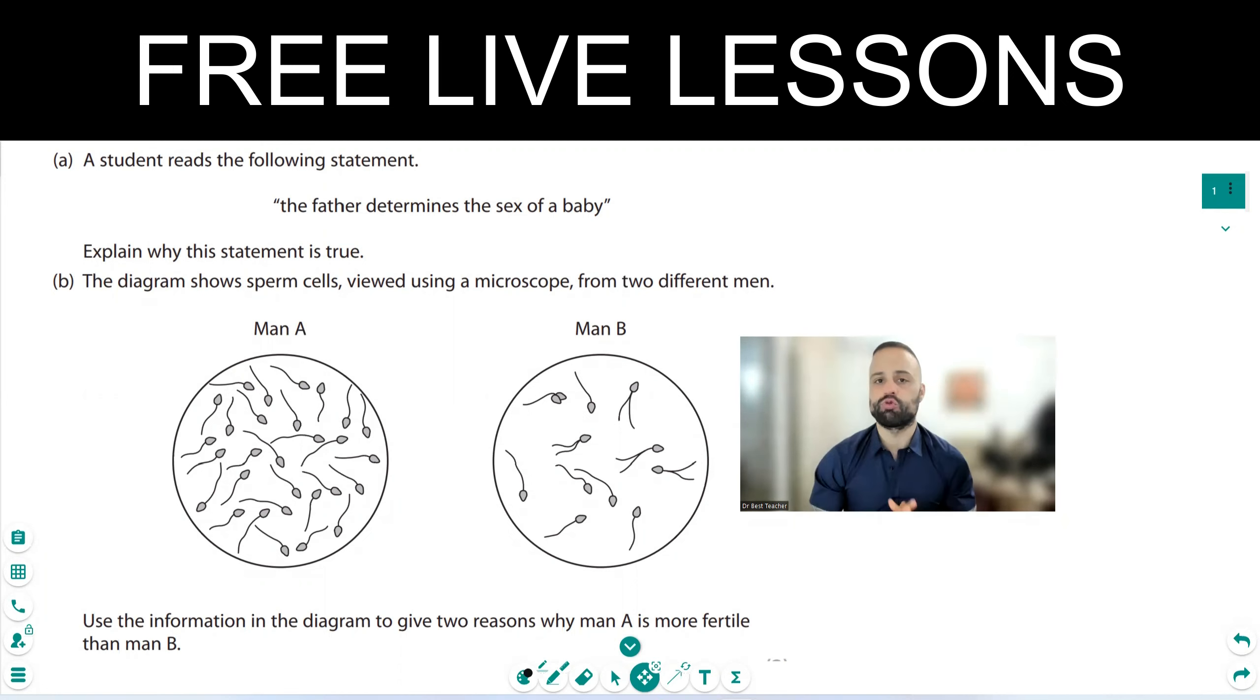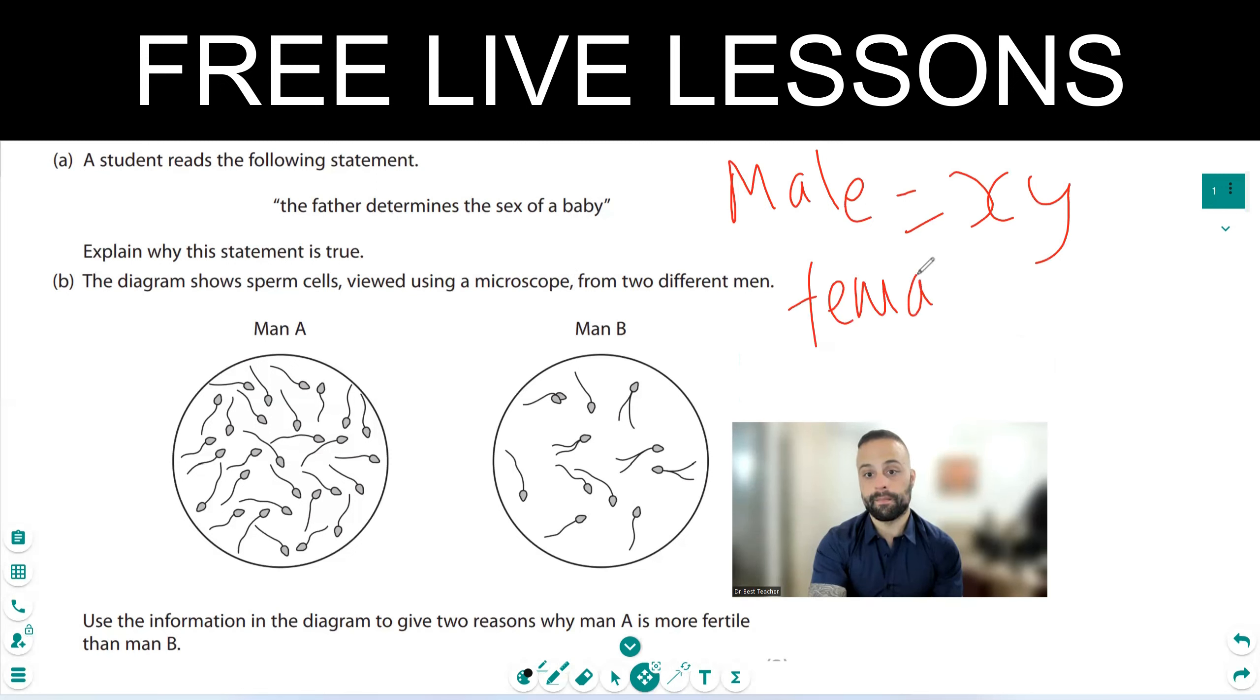Okay, so there's 46 chromosomes in a human cell, 23 of them pairs, 23 pairs they occur in. And the 23rd pair, the last 23rd pair, determines the biological sex of the baby. So a male has an XY, and a female has an XX chromosome.